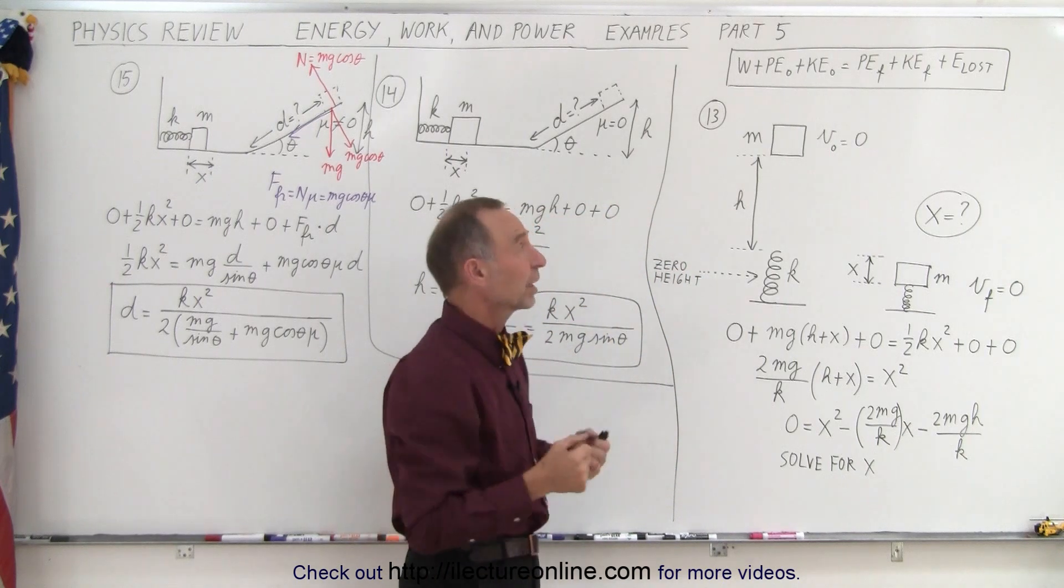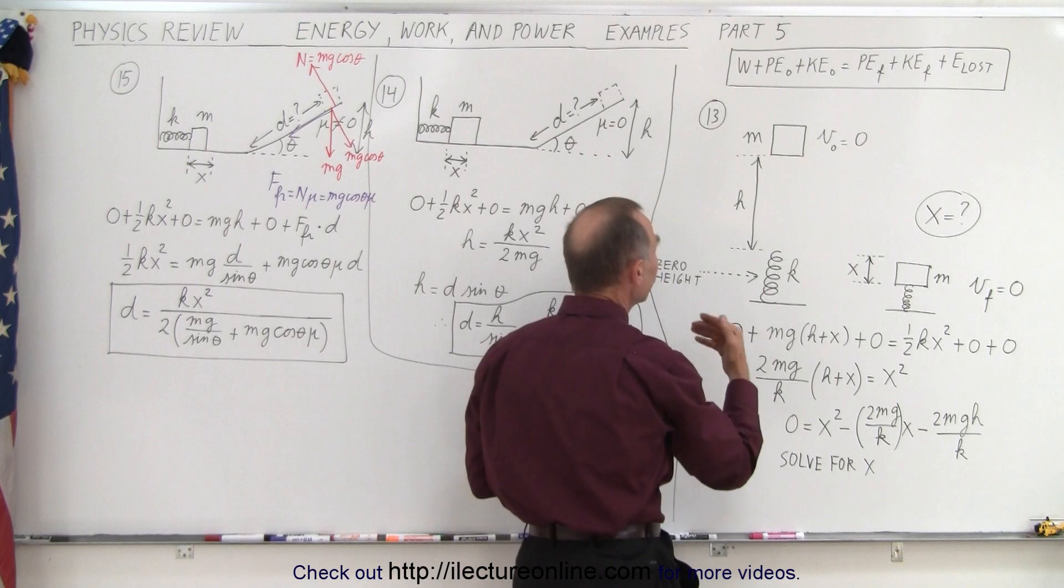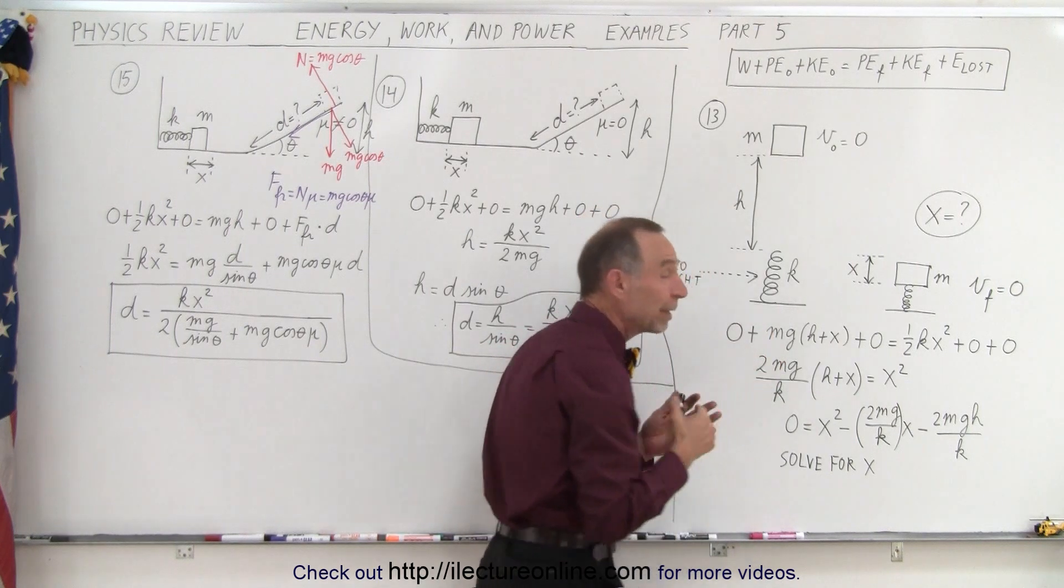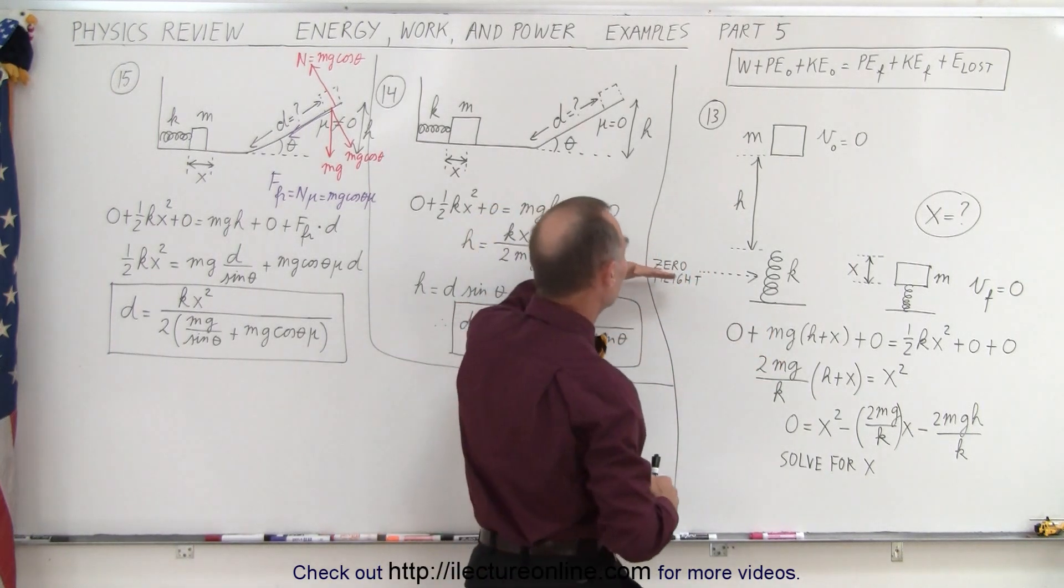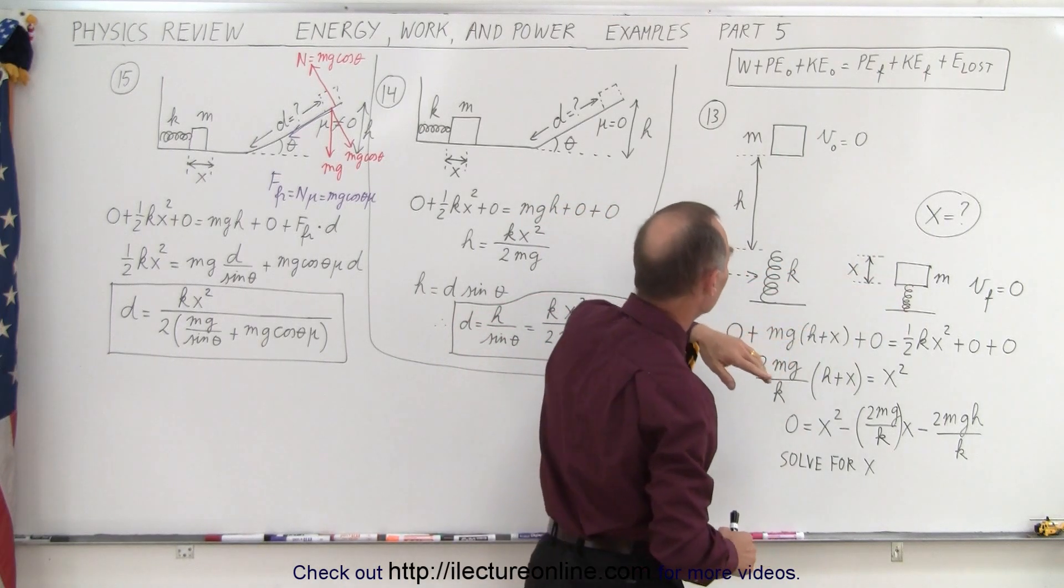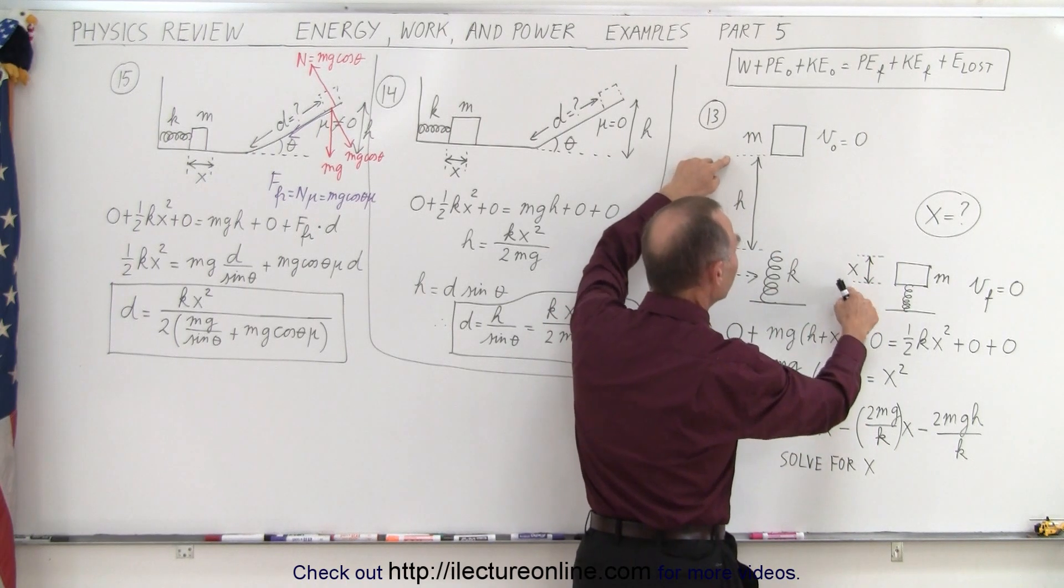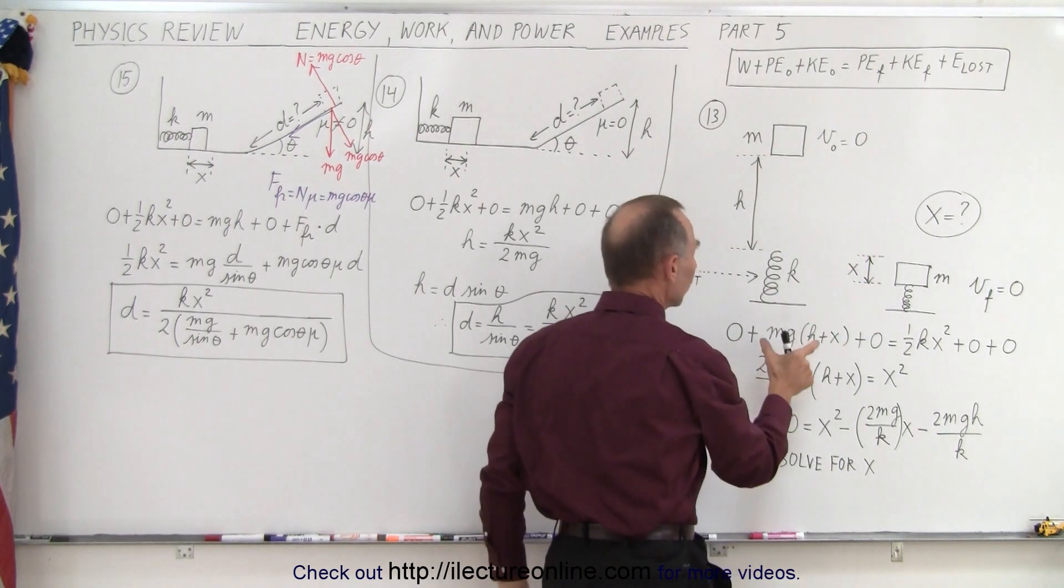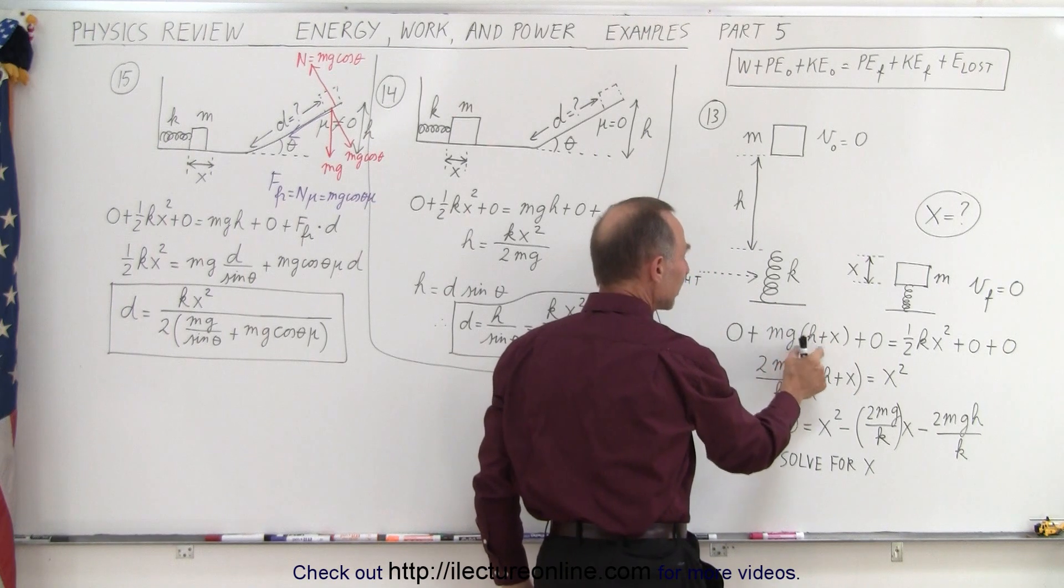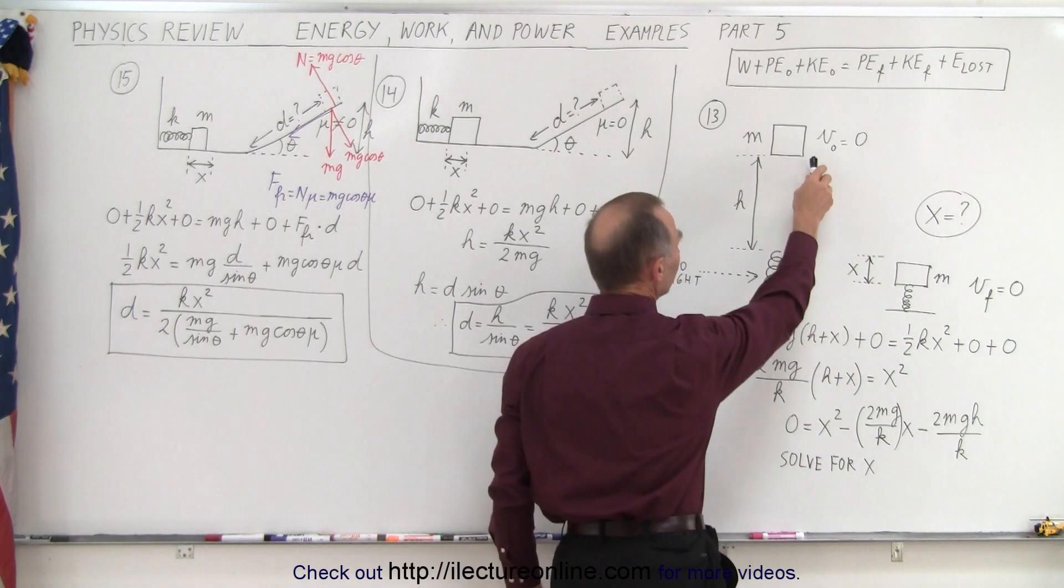So we use the energy equation again. The work put into the system would be zero. The initial potential energy depends upon where the zero height is. Let's put the zero height at the top of the spring when it's compressed, so that the total height above that point would be h plus x, where x is the distance compressed. So the initial potential energy is mg(h + x). There's no kinetic energy because we start from rest.